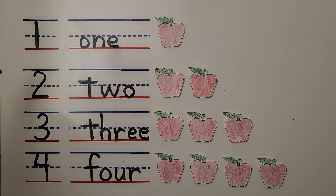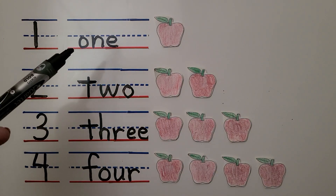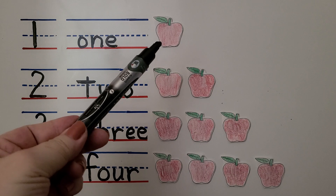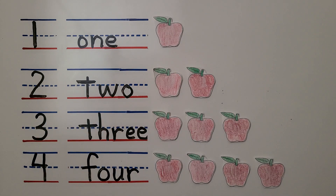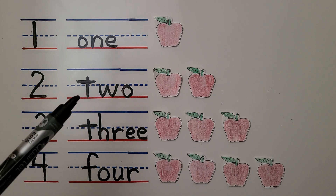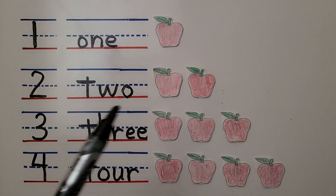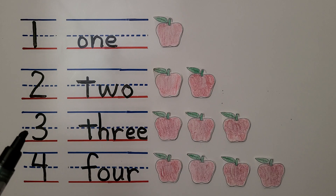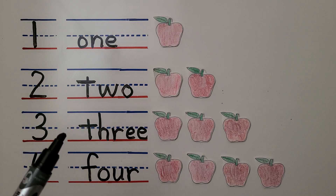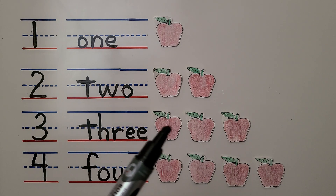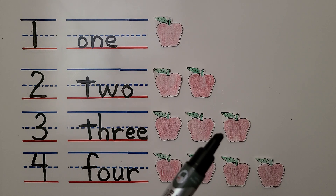Here we have the number one. Here we have the word one. We have one apple. Here we have the number two. Here we have the word two. We have one, two apples. Here we have the number three. Here we have the word three. We have one, two, three apples.